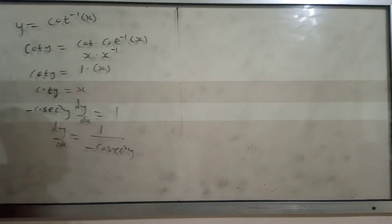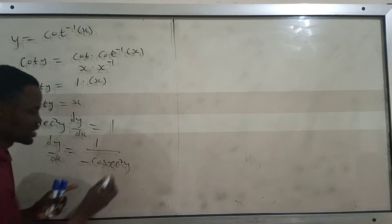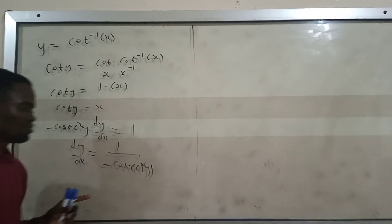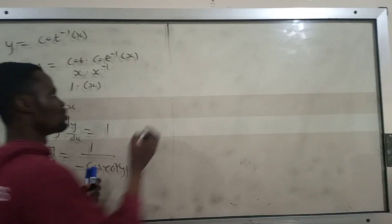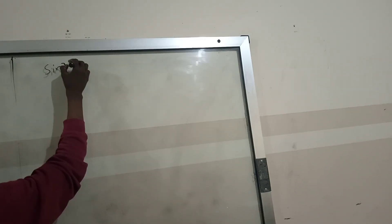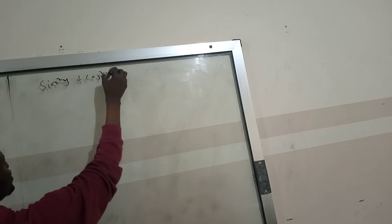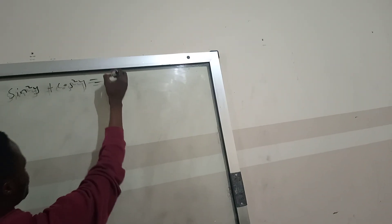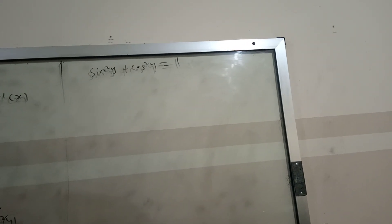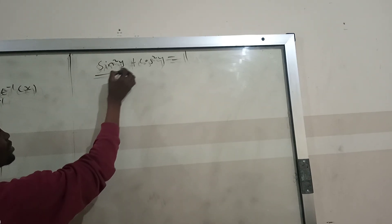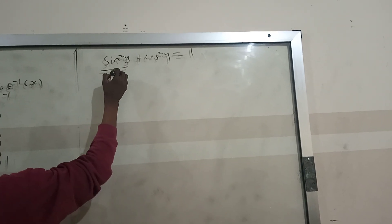So this one is simple, but we are not done. We are not interested in keeping this y. We want the y to be expressed in terms of x. So we go back to the formula: sin²(y) plus cos²(y) equal to 1. This time, in the previous video we were dividing both sides by cos²(y), but here we divide both sides by sin²(y).